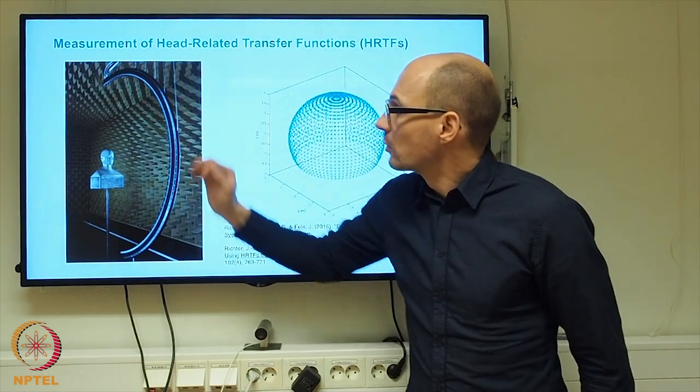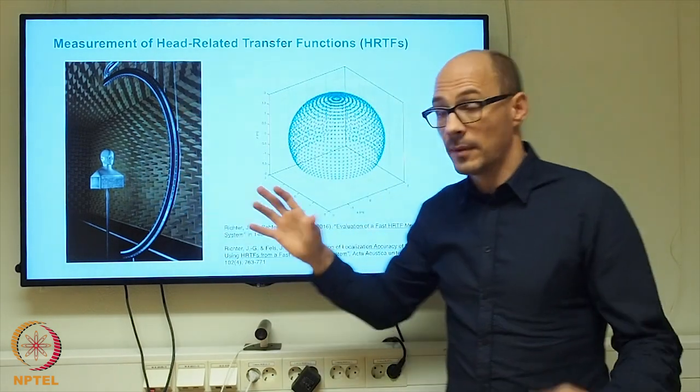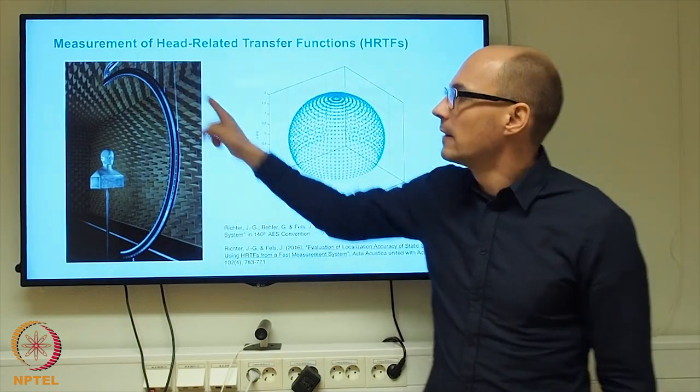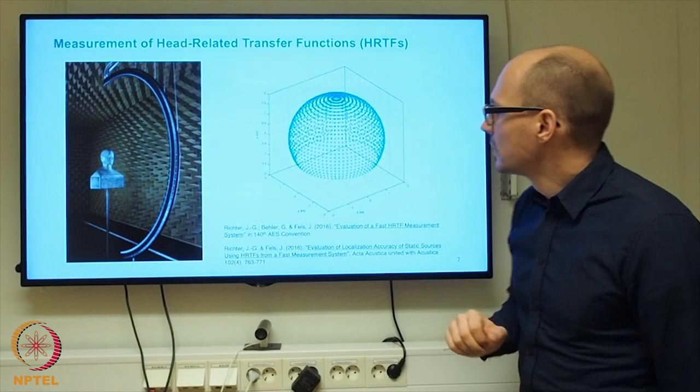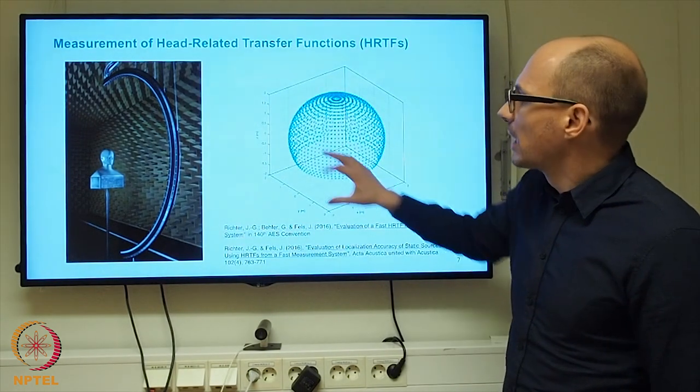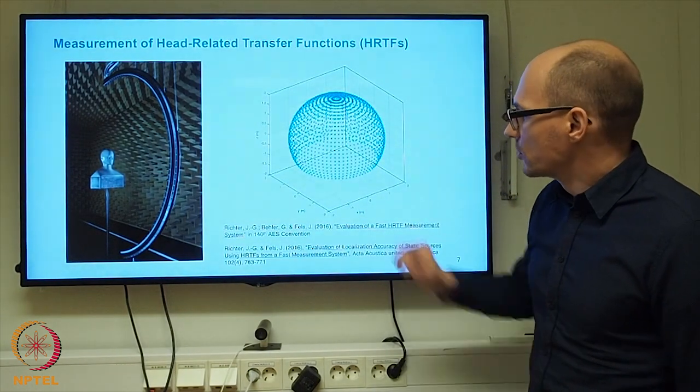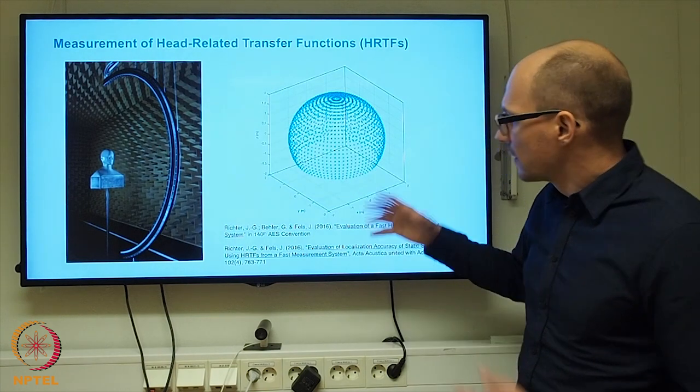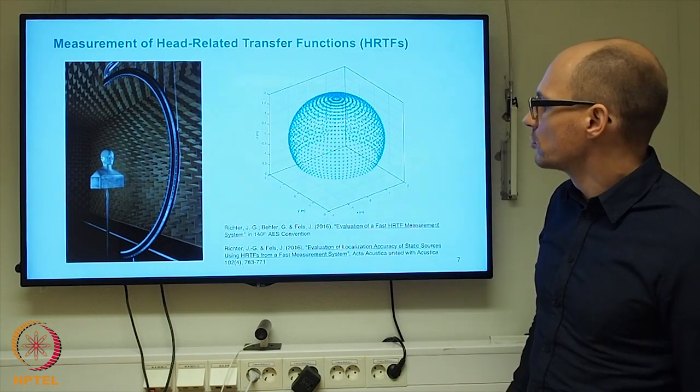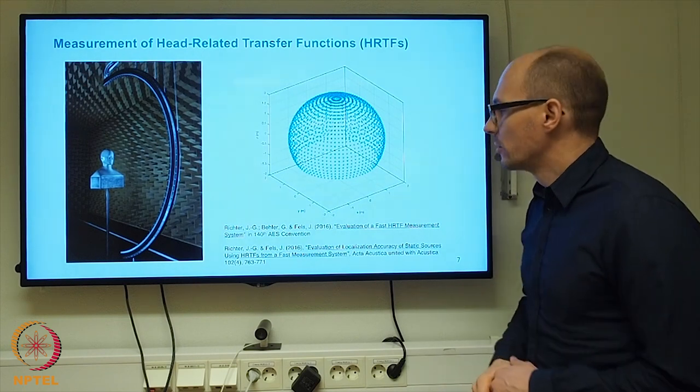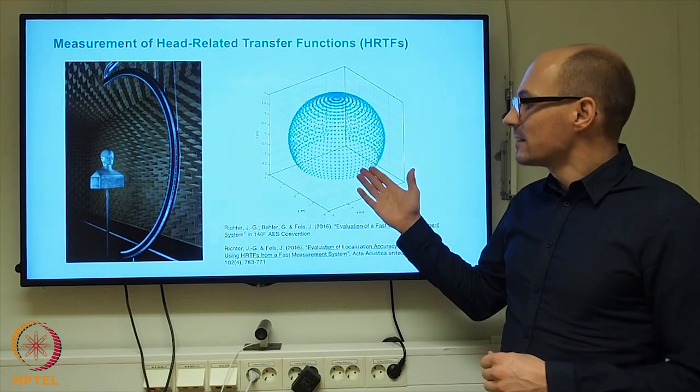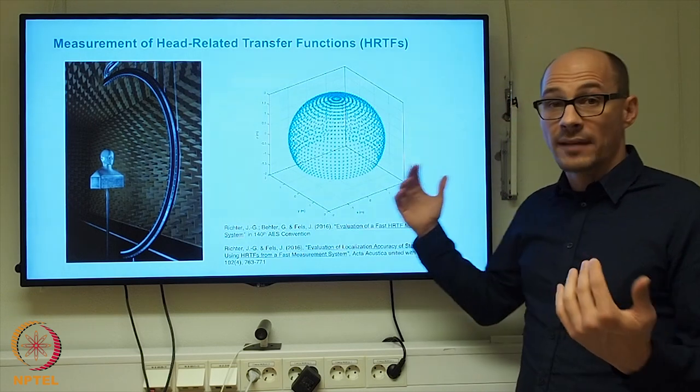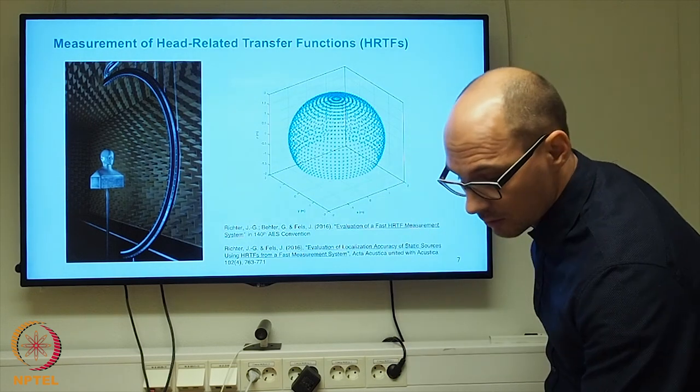And then either the arc will rotate to a new angle, or the user or the dummy head will rotate slightly. And then the same procedure is repeated to cover all possible angles around the user, as it is indicated in this graph. So each of these marks inside this three-dimensional space corresponds to a measured loudspeaker position. So this allows us to measure all the transfer paths from source directions to the user.